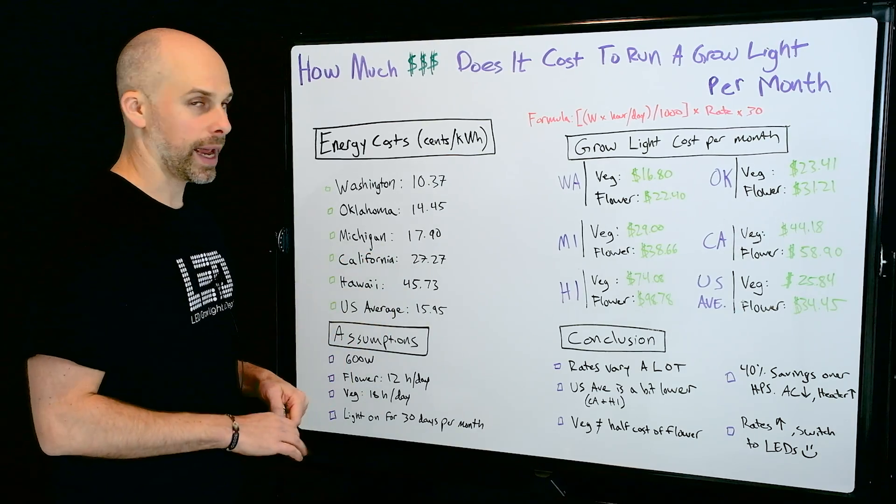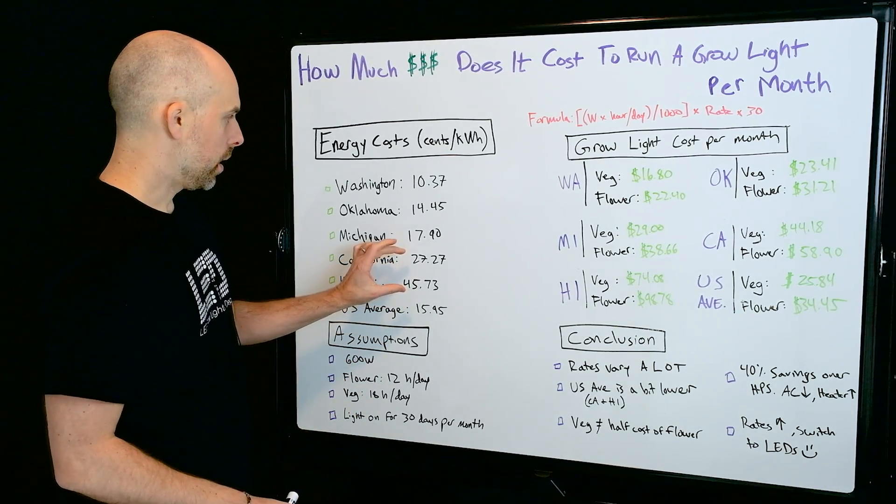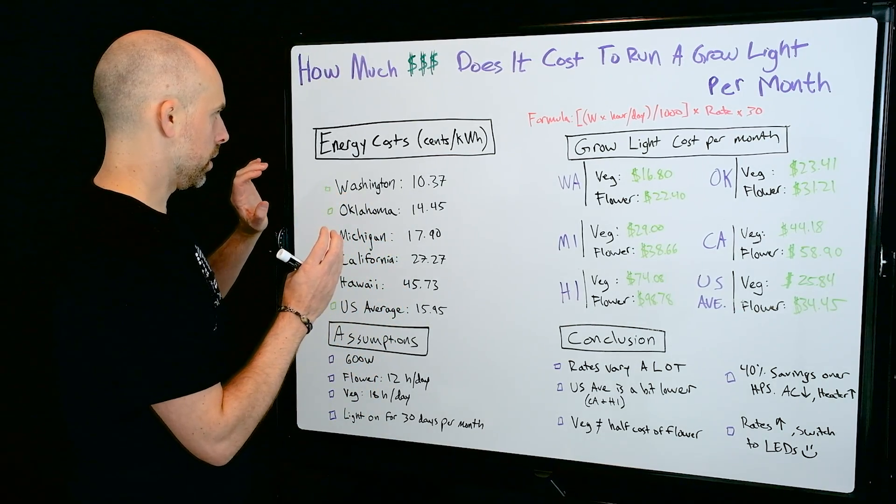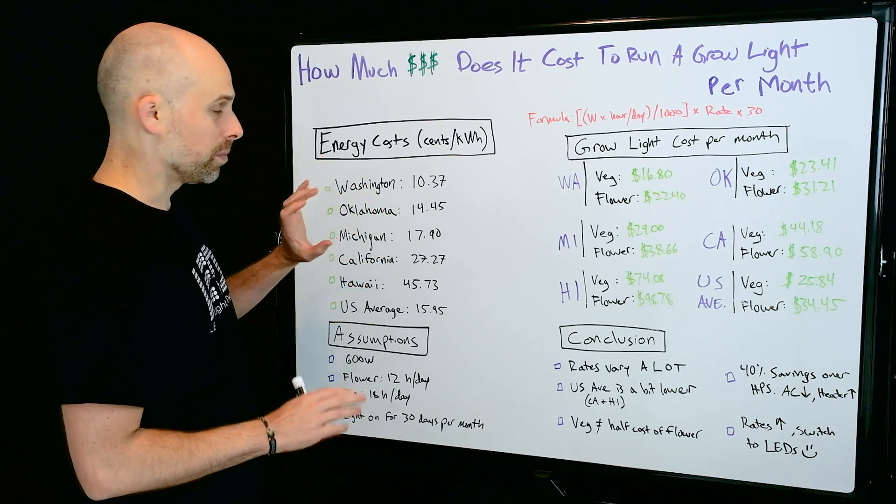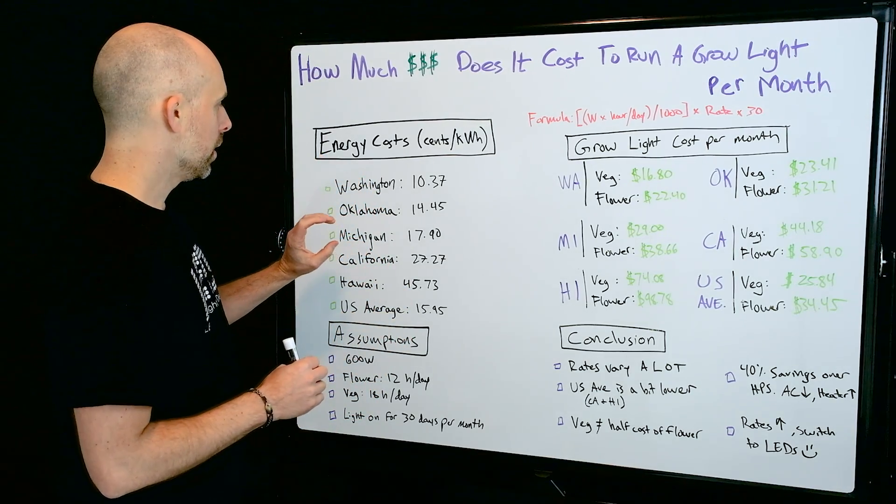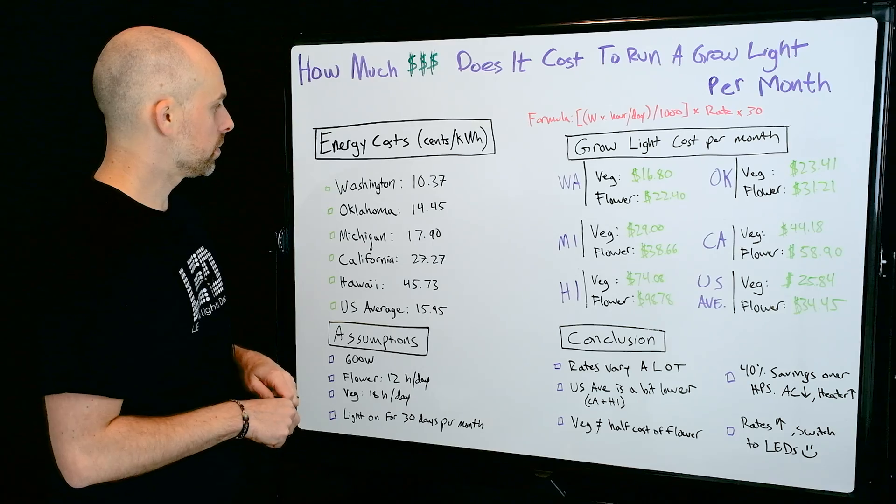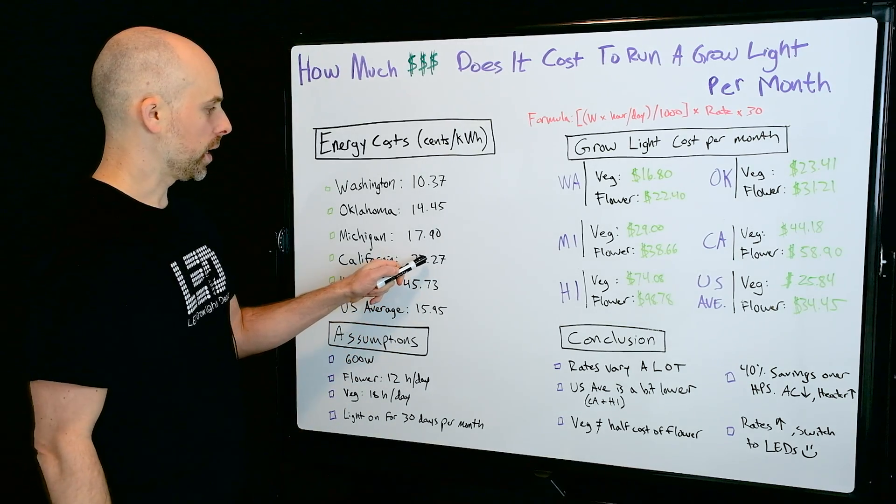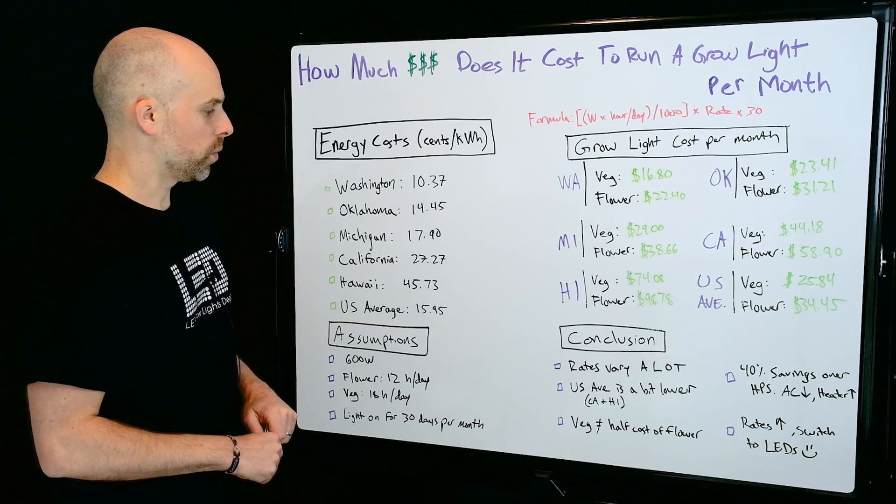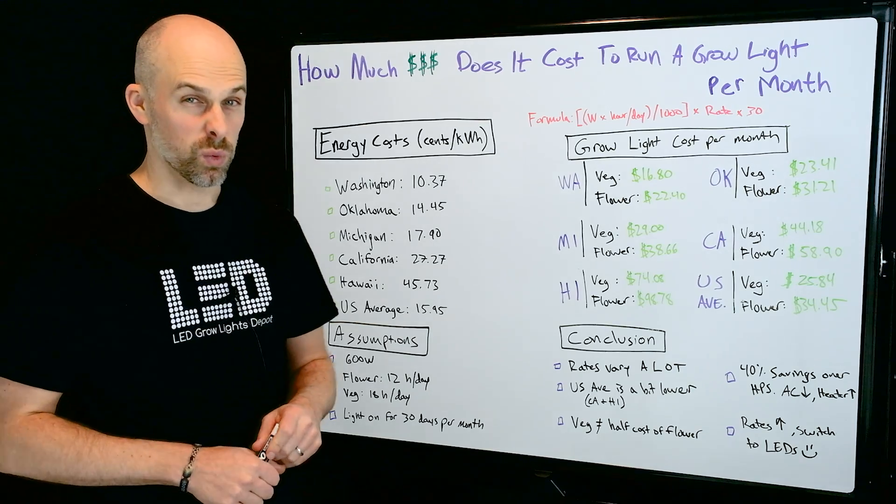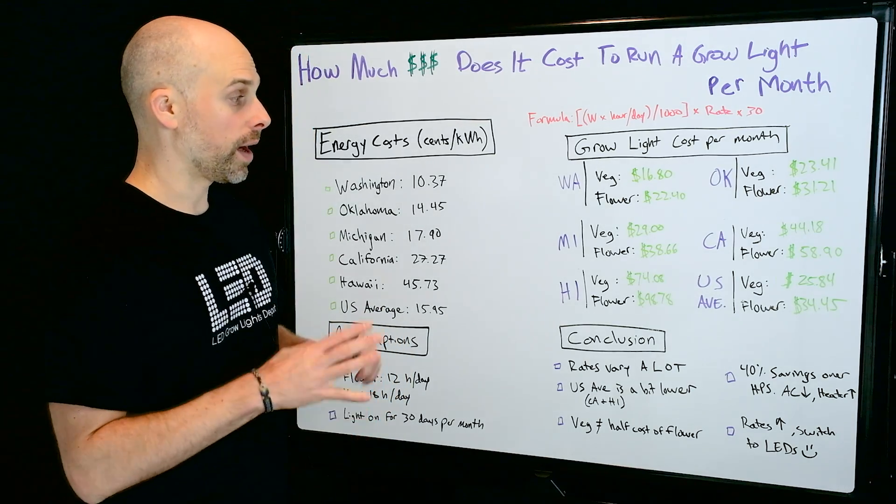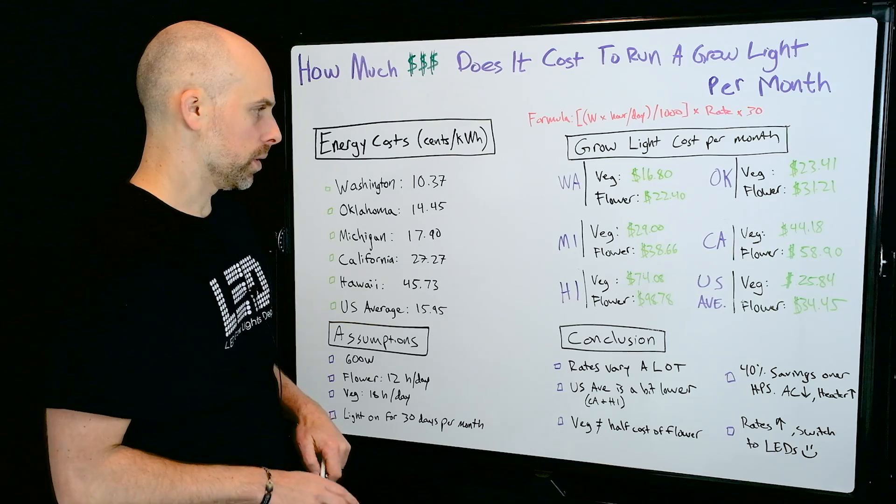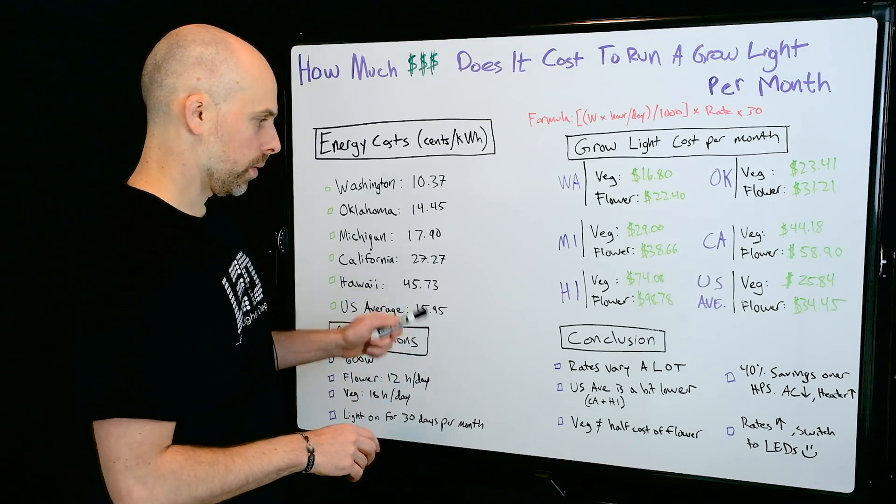And the US average is a little bit lower if you take out California and Hawaii, since most of the states are right in the range of maybe 14, 15, 16 cents per kilowatt. So having California at 27 cents and Hawaii at 45 cents really skews up the average. So on average in the US, that number is a little bit lower if you take out those states.